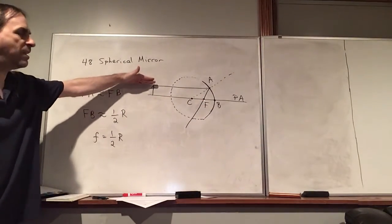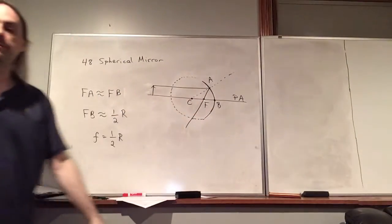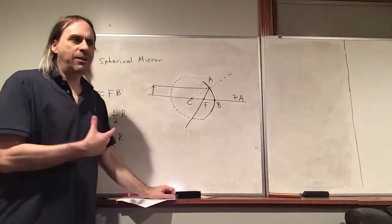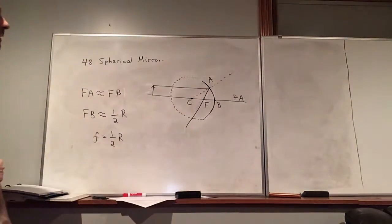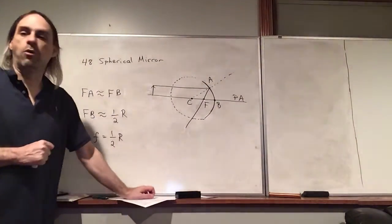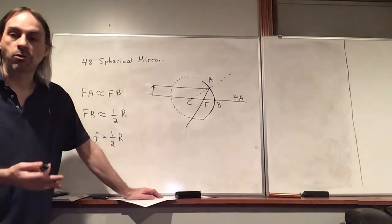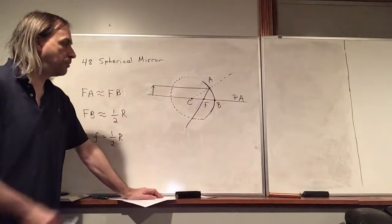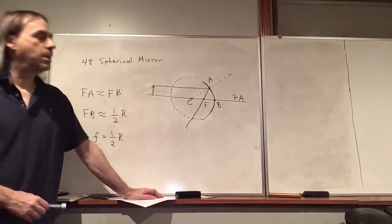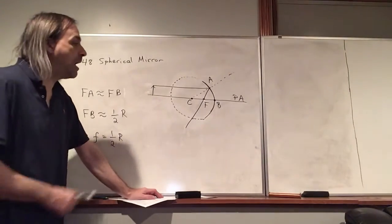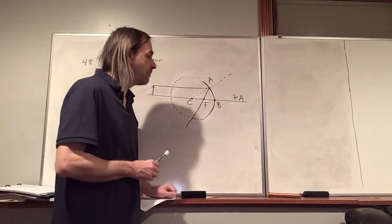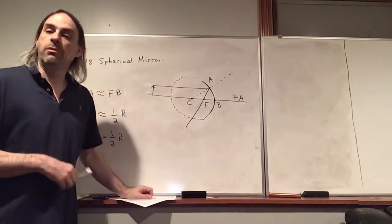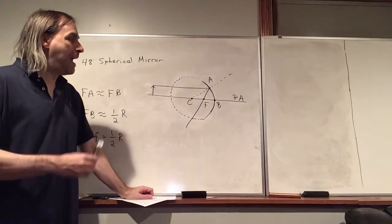This approximately equal thing does have some effect because if you consider a ray that's not very close to the principal axis, you'll miss the focal point. So if you have a bunch of rays close to the principal axis, they're all going to pass through that focal point. But if the rays start getting further away, they're going to miss the focal point a little bit. So if you create an image with a spherical mirror, it'll actually be a little bit blurry. They call that spherical aberration, which is something you don't really want.